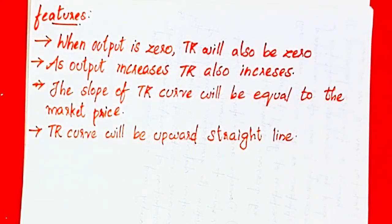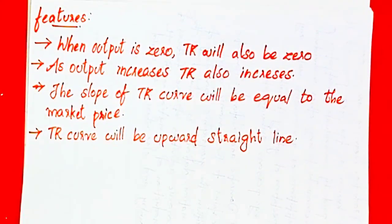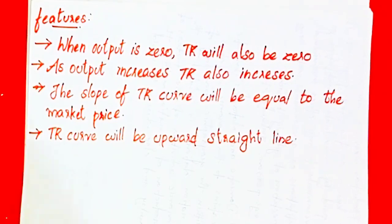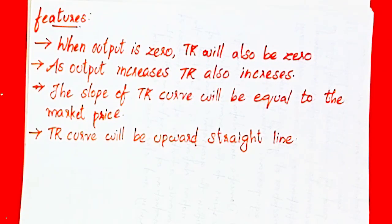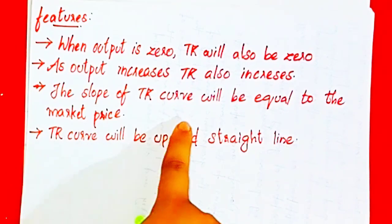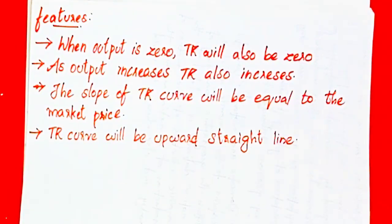Even when total revenue increases, TR increases proportionally. The slope of the TR curve will be equal to the slope, which equals the market price.